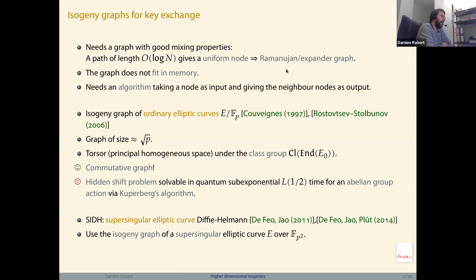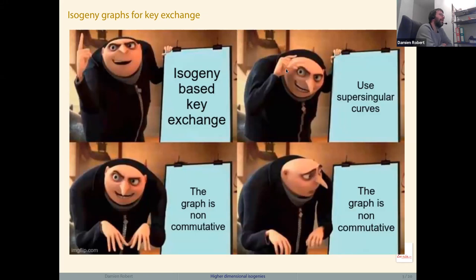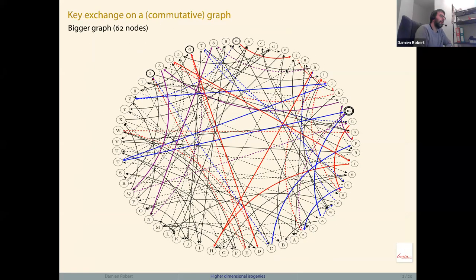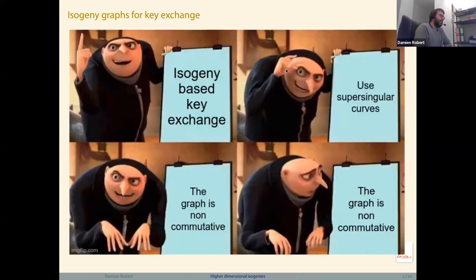The more recent idea — SIDH, from about 10 years ago by De Feo, Jao, and Plût — is to use the isogeny graph of supersingular elliptic curves rather than ordinary ones. There are roughly p supersingular elliptic curves over F_{p²}, and the graph is non-commutative. The non-commutativity is both the nice and the bad thing: it provides post-quantum security, but the key exchange shown before no longer works directly.